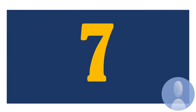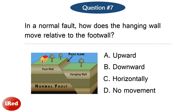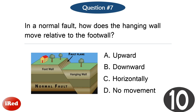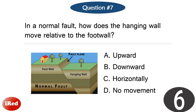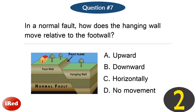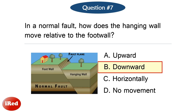Question number seven. In a normal fault, how does the hanging wall move relative to the footwall? The correct answer is letter B: downward.